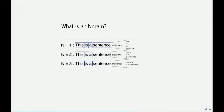An n-gram is simply a chunk of text that has a length n. So in the sentence 'This is a sentence,' we have four unigrams. In the second example, we have bigrams: 'this is,' 'is a,' and 'a sentence.' We can go all the way up to n. The nice thing is we can capture phrases in context. This approach lets us chunk text in different ways — going all the way down to the sentence and sub-sentence level, which has some nice properties.